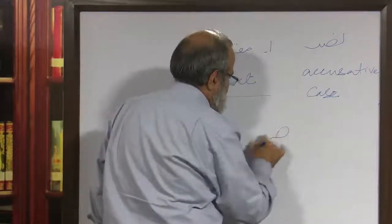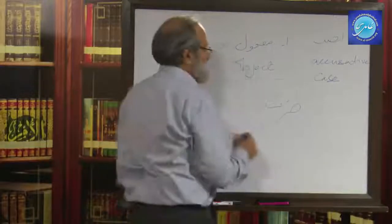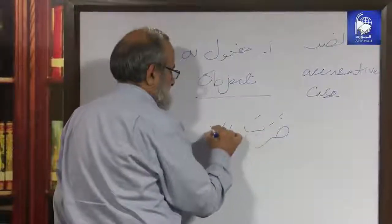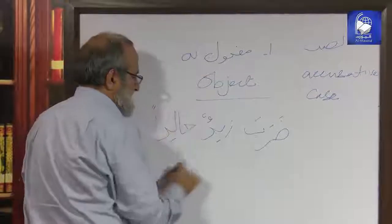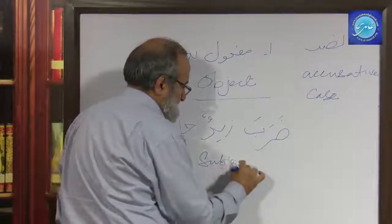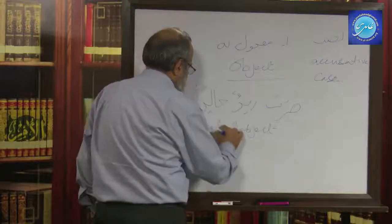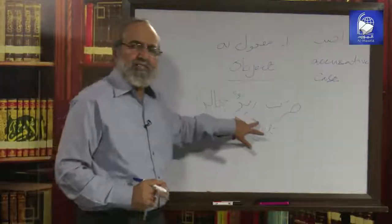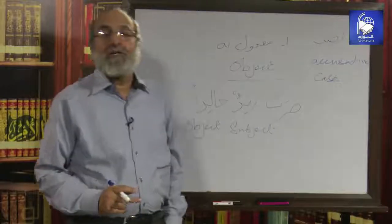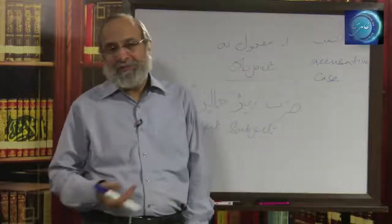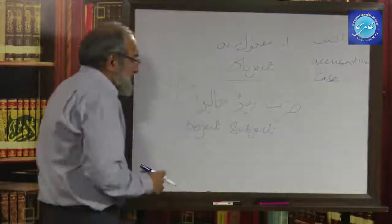Going by the example we have already done, Dharaba is a verb — and mind you, we have not started talking about verbs, but we need to employ it here to talk about Nasab. Zaidun is the subject and Khalidun is the object. Because it's a subject, Zaid is taking the form of Rafa. And Khalidun, the one who was beaten up, has taken the position of an object and is therefore in the Nasab form.